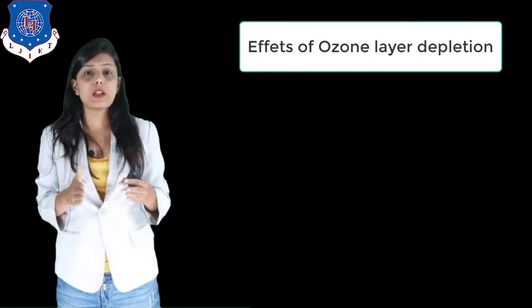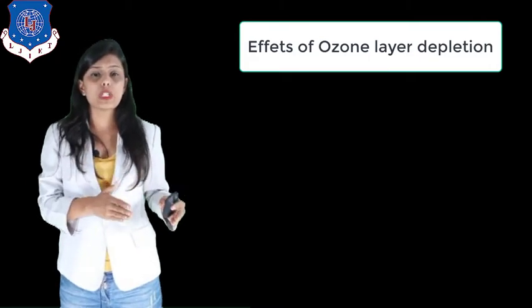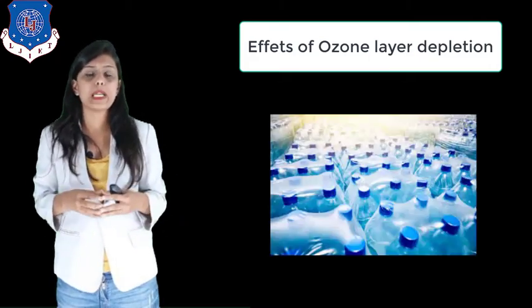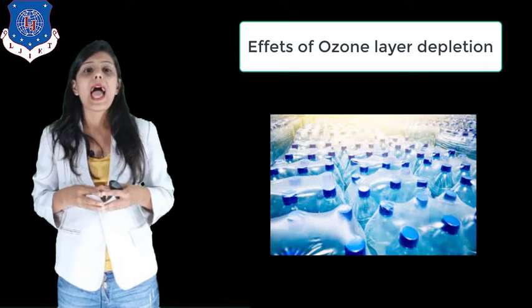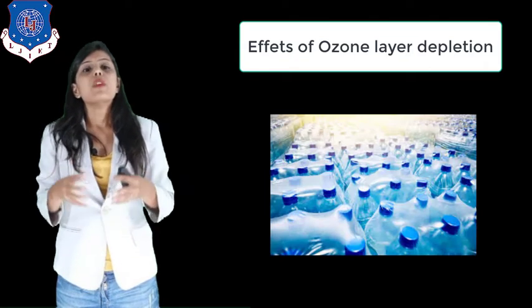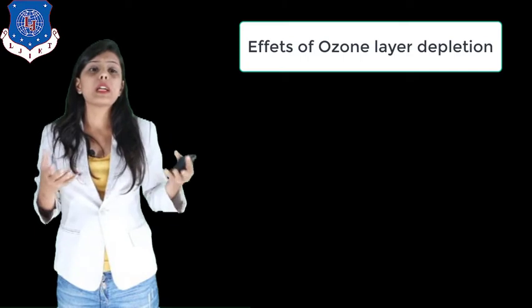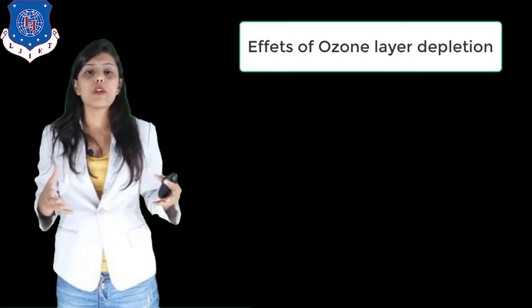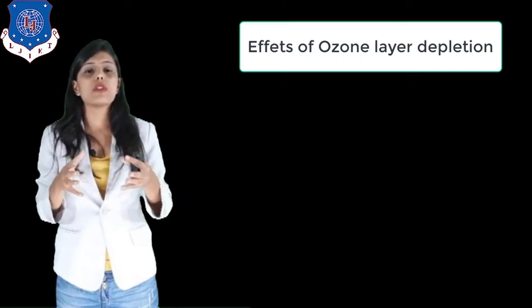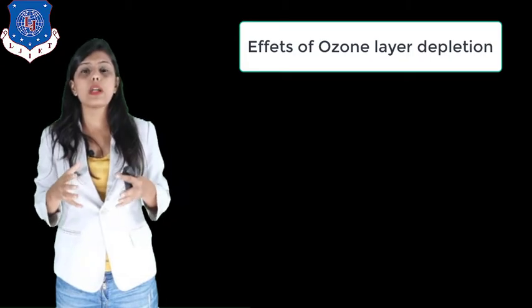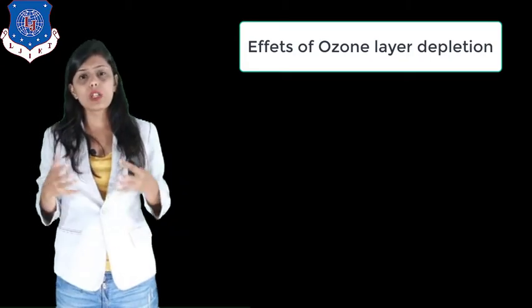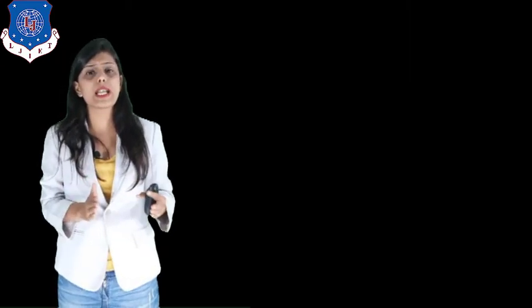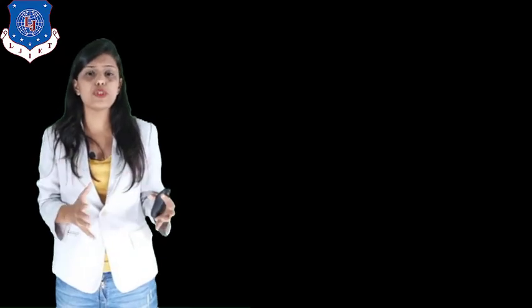The sixth effect is degradation of paints, plastics, and other materials, which will result in economic loss due to the effects of ultraviolet radiation resulting from ozone layer depletion. So these were the six effects of ozone layer depletion.